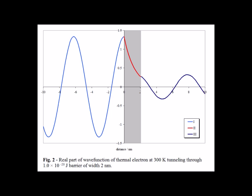Here we have an electron tunneling through a 2 nanometer barrier of magnitude 1 times 10 to the minus 20 joules. Note that the particle is traveling from left through the classically forbidden region shaded in gray through to the right.